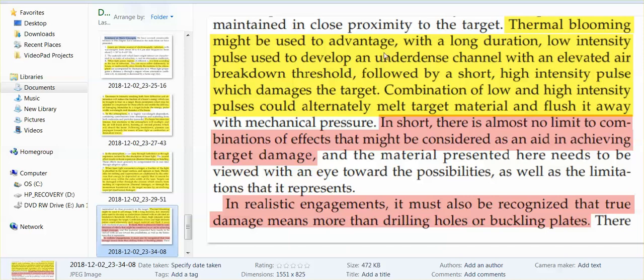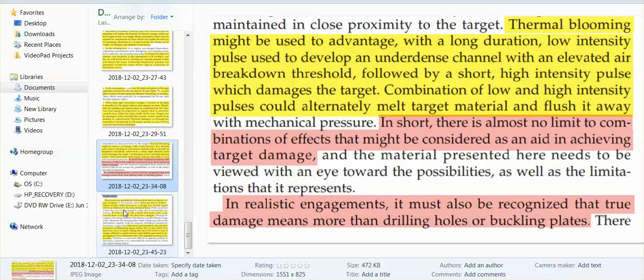Thermal blooming might be used to advantage with a long duration, low intensity pulse used to develop an under dense channel with an elevated air breakdown threshold, followed by a short, high intensity pulse which damages the target. Combination of low and high intensity pulses could alternately melt target material and flush it away. In short there is almost no limit to combinations of effects that might be considered as an aid in achieving target damage. In realistic engagements it must also be recognized that true damage means more than drilling holes or buckling plates or buckling roads. Very dangerous implications.